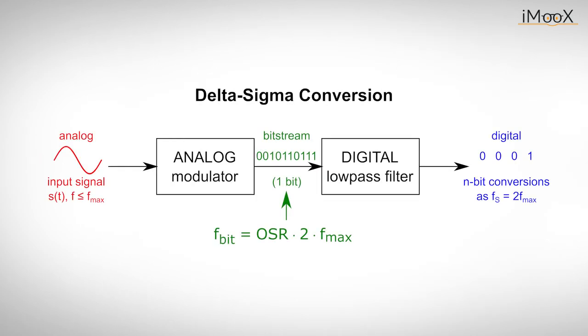Here we can see that an input signal limited to a maximum frequency fmax is converted by a modulator into a bit stream, as we have already discussed. The modulator is clocked with a multiple of the minimum Nyquist frequency, 2 times fmax. It generates an output bit stream of the rate fbit equals OSR times 2 times fmax, where OSR is the so-called oversampling ratio.